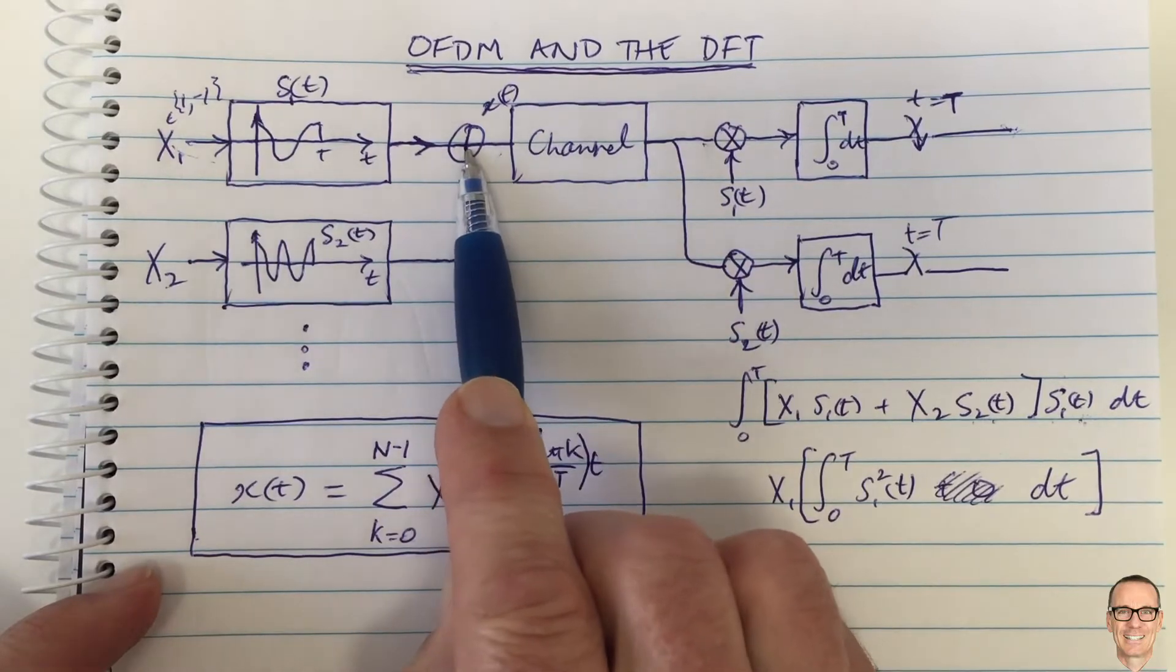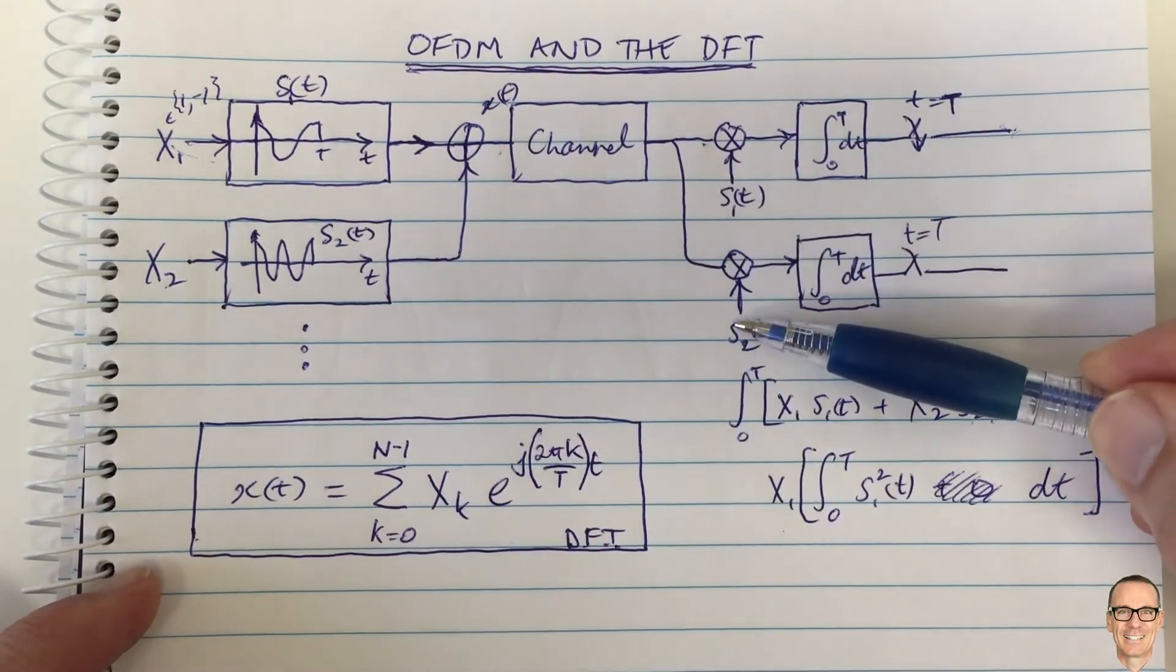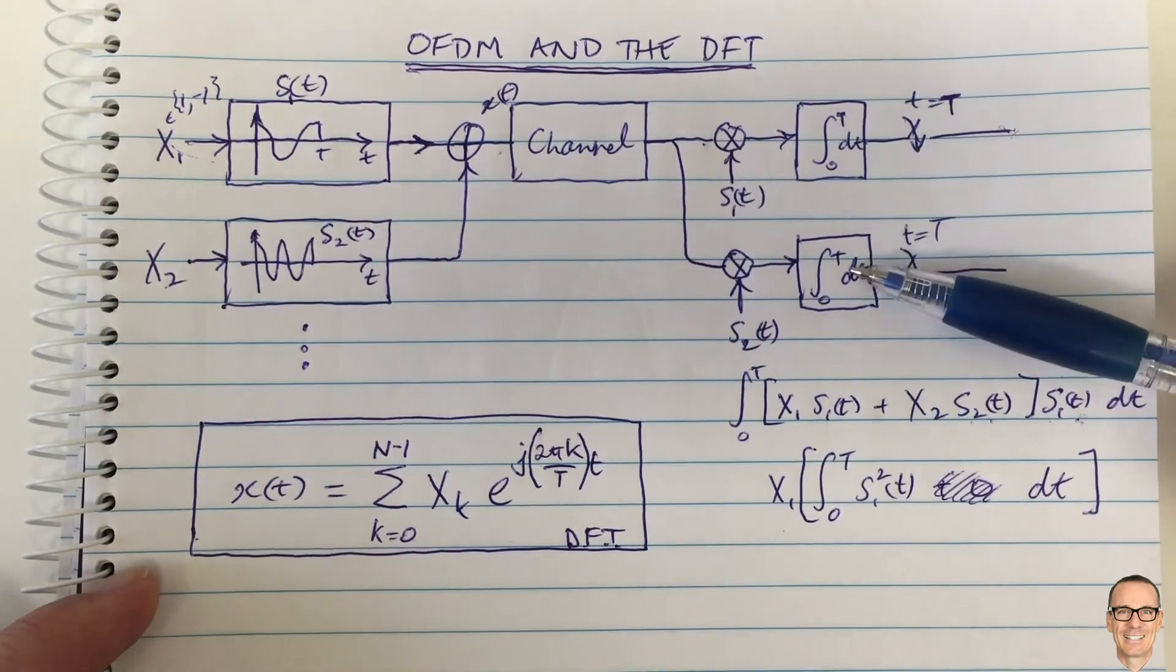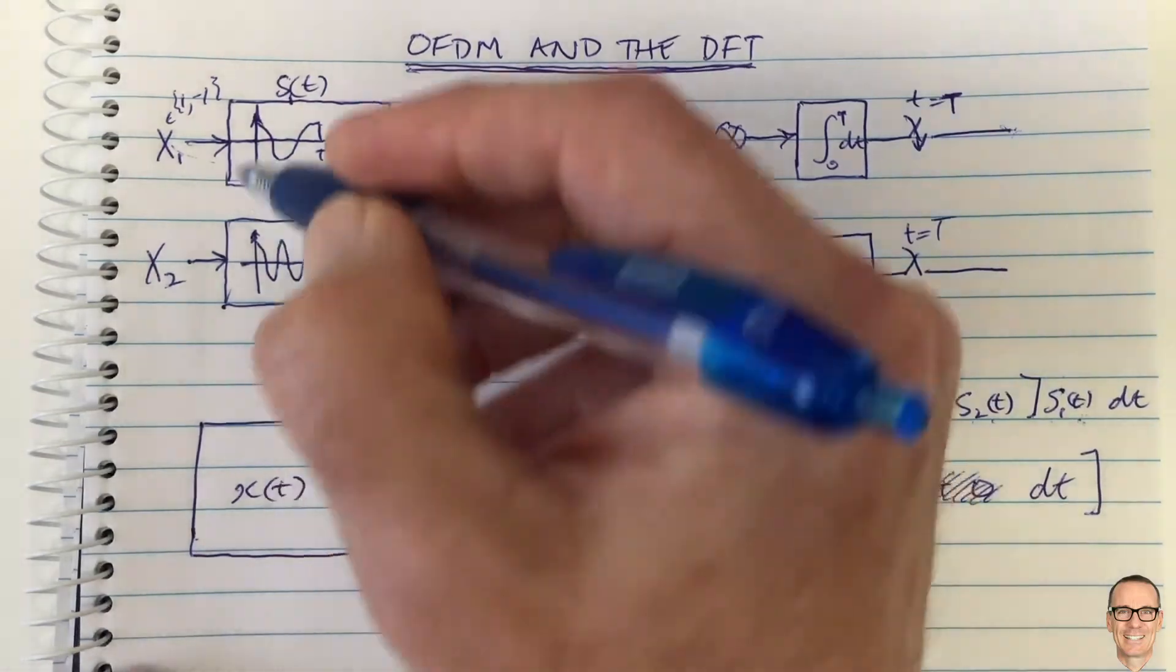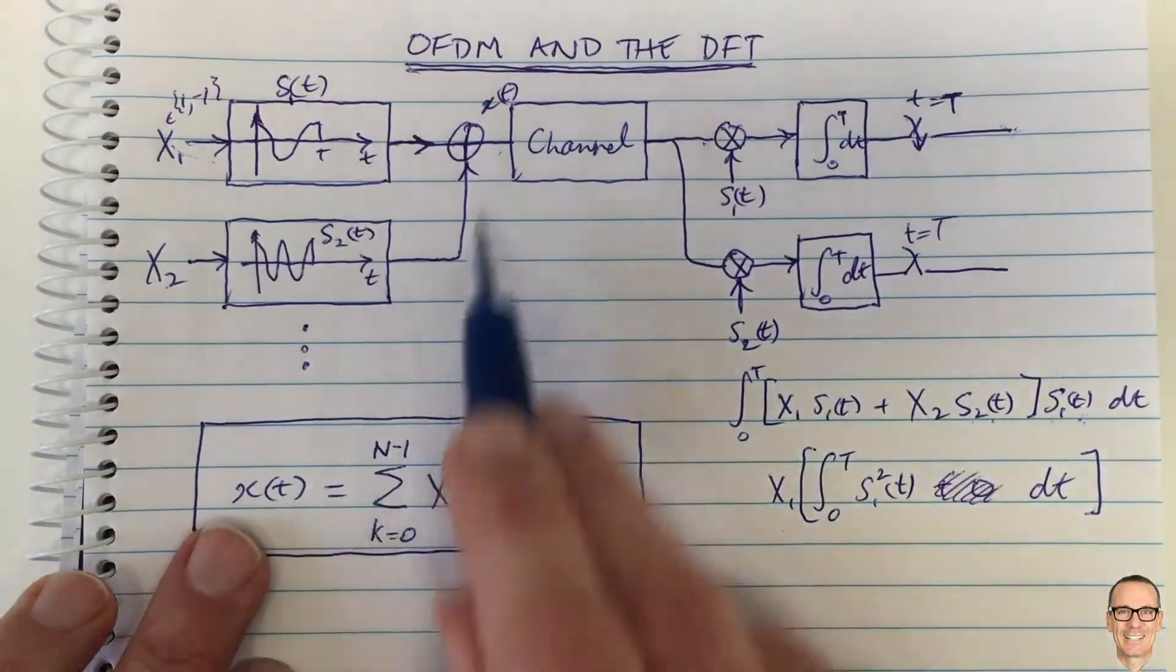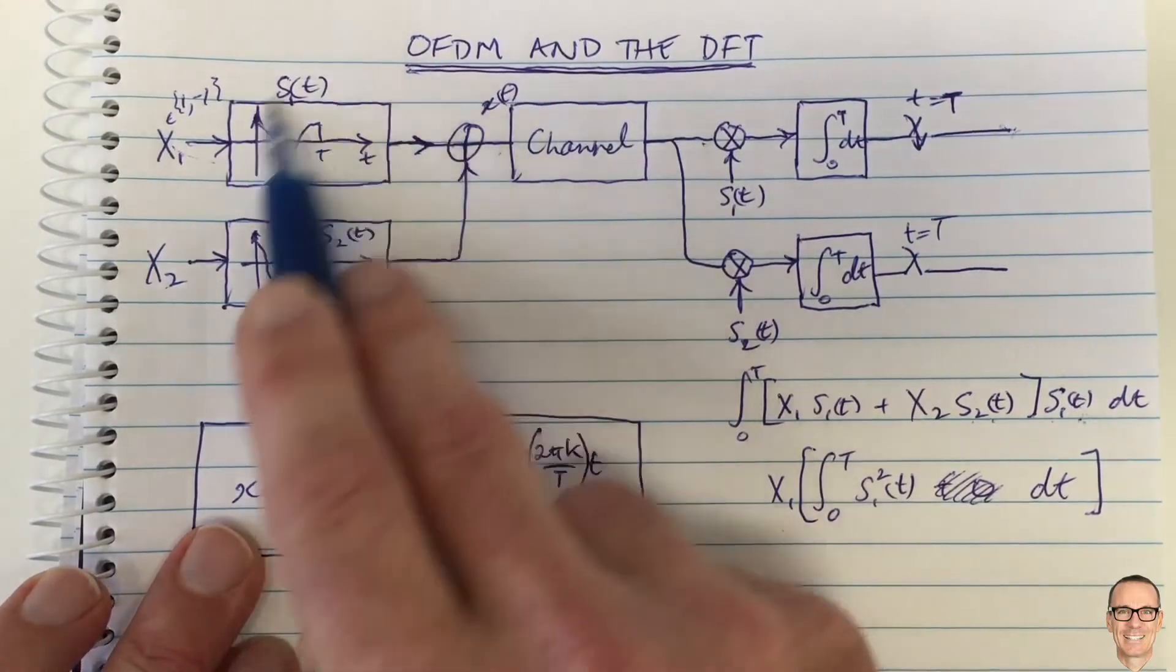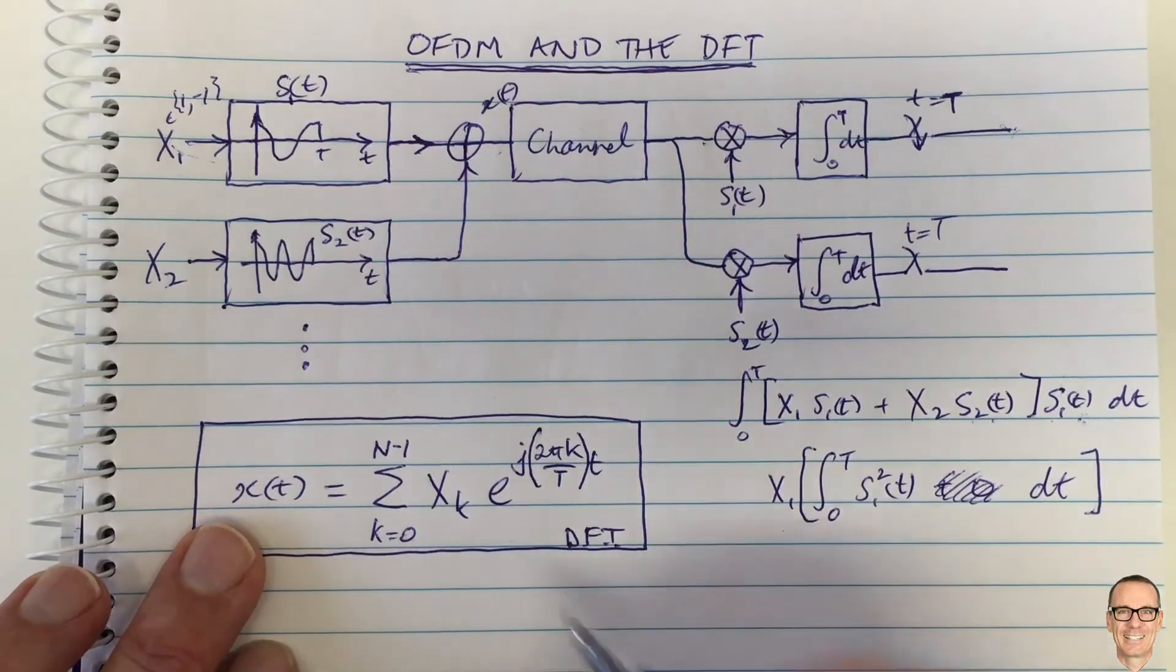Which would otherwise require analog electronics, and for each of these multipliers and each of these oscillators and each of these integrators, instead of requiring analog electronics for all of this, we can replace all of this. Because this is the input sequence x(t), to generate x(t).